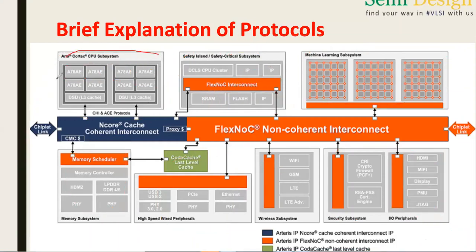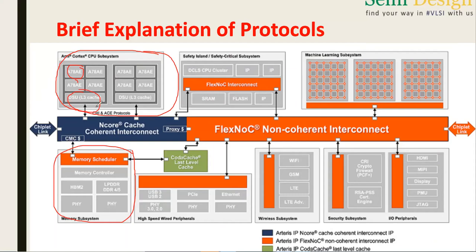Suppose I am communicating with a CPU subsystem to the memory subsystem. In the CPU subsystem, we have all the cores, number of cores, cache memory - things like A7, A8, DSU. Now this subsystem wants to communicate with the memory. How it communicates is through an interconnect - we can call it an interconnect, interface, or bus. This interconnect is nothing but a protocol. We are communicating from one subsystem to another subsystem through the interconnect, and that interconnect is nothing but a protocol.